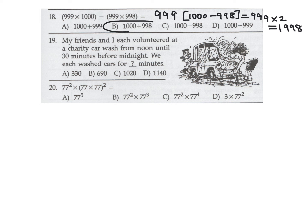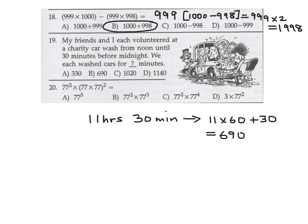My friends and I each volunteered at a charity car wash from noon until 30 minutes before midnight. That's a total of 11 hours and 30 minutes. Converting to minutes: 11 times 60 plus 30 equals 690 minutes. Therefore that's B.